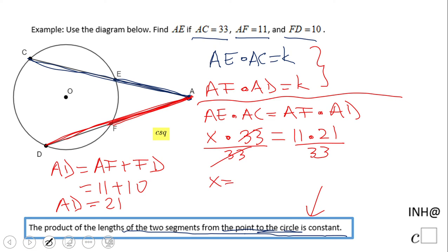So what do we get? 11 goes into 33 three times, and 21 divided by 3 is 7. So AE is 7.